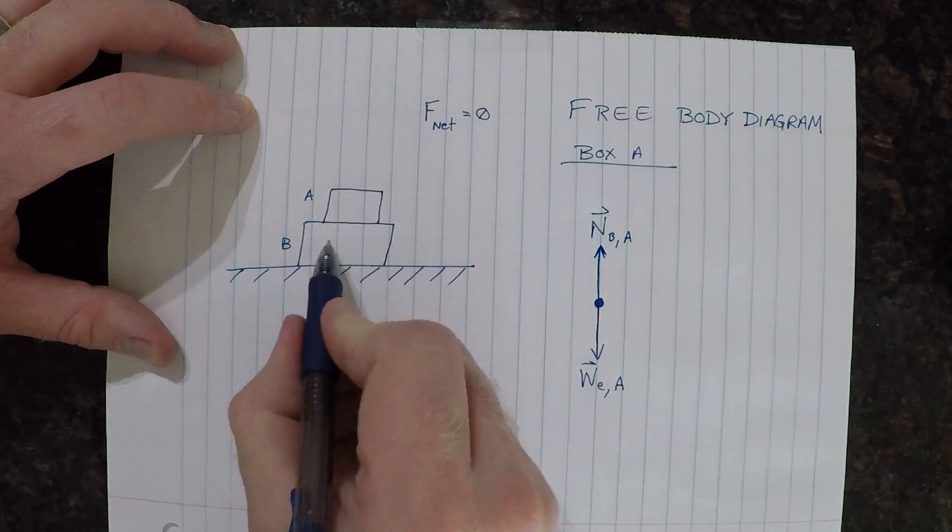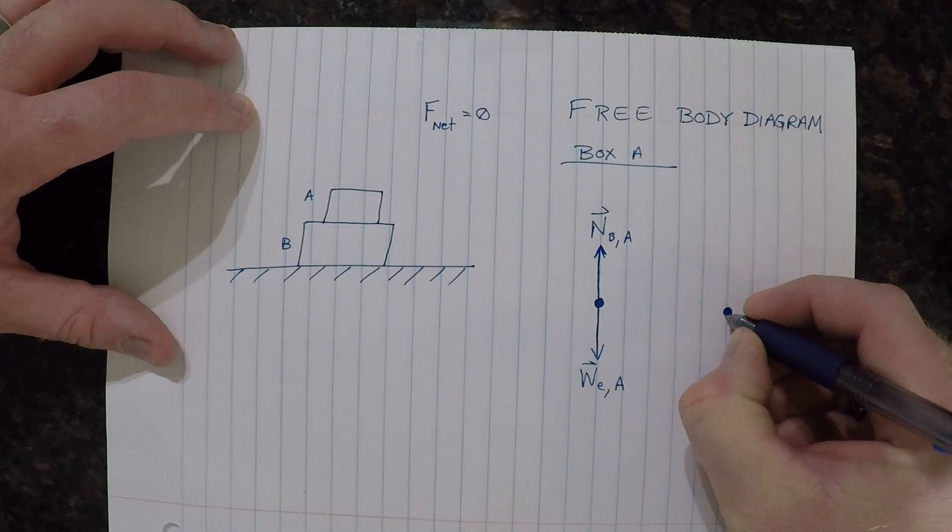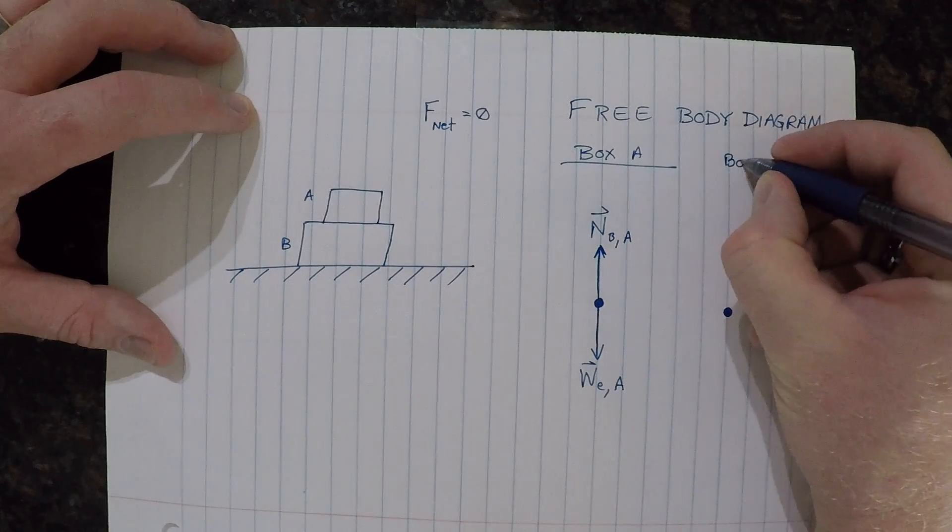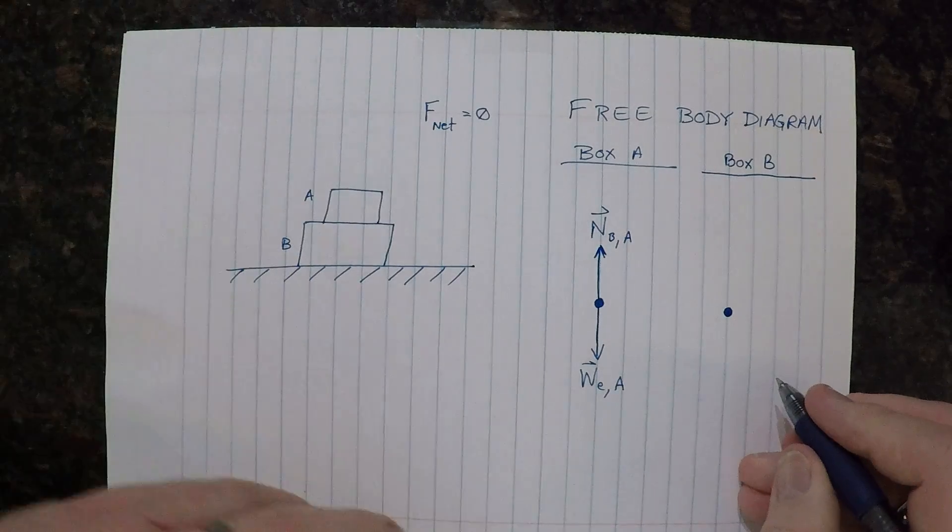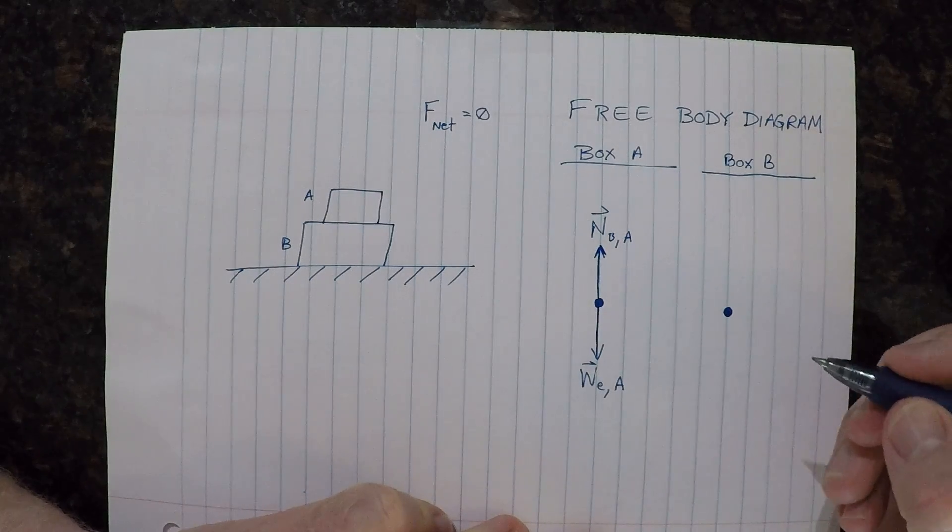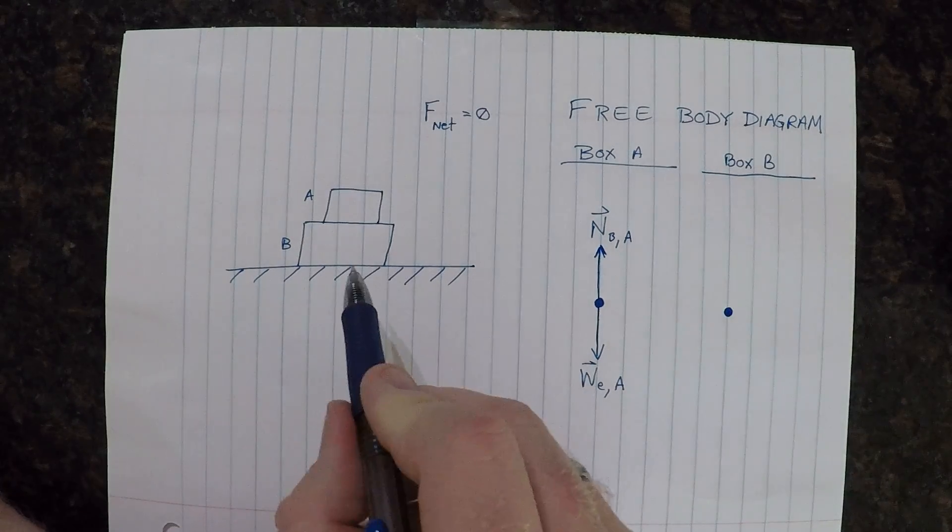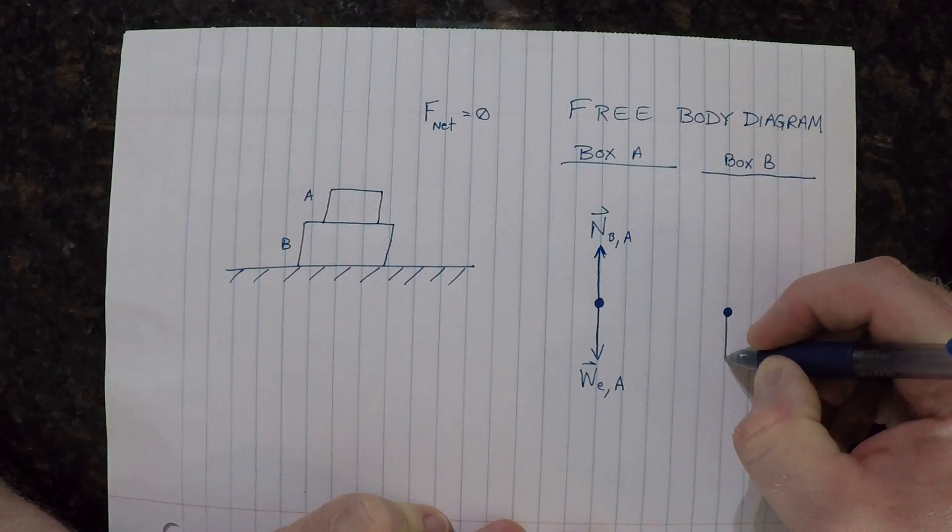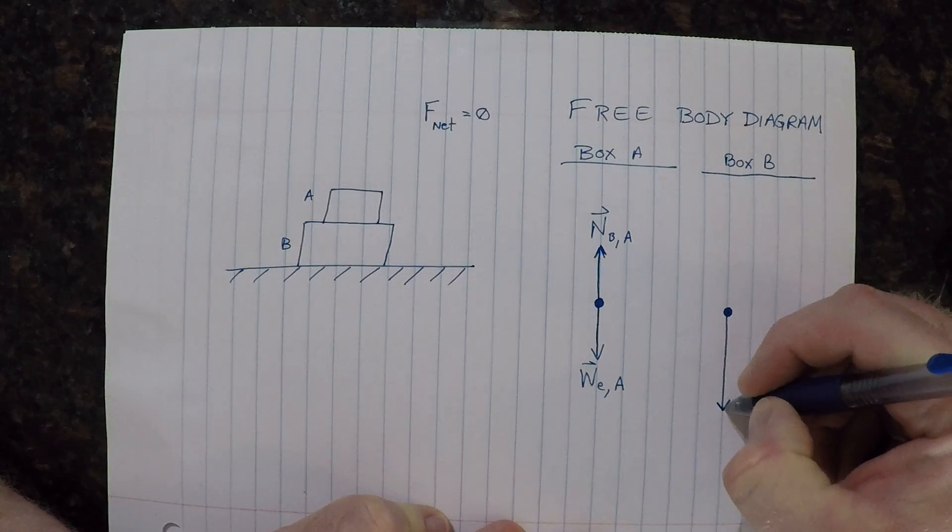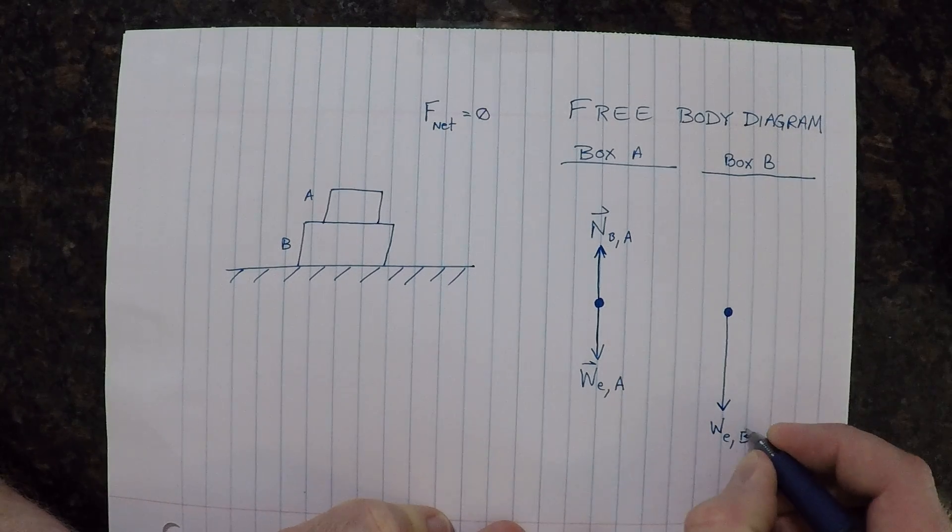Now let's turn to the bottom box, which is box B. Again, I will draw a dot. We'll call this the box B diagram. Now, I know that there is gravitational force on it, which means that there is a weight pulling down. Box B, we assumed, is more massive. So the weight of box B is going to be a larger arrow, like so. And so this is the weight of Earth on box B.